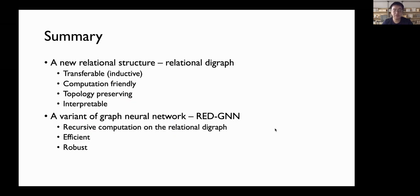In summary, we propose a new relational structure called relational digraph that is transferable, computation-friendly, topology-preserving, and interpretable. And we propose a variant of GNN called RED-GNN to enable efficient computation on relational digraphs. It is robust for different depths.